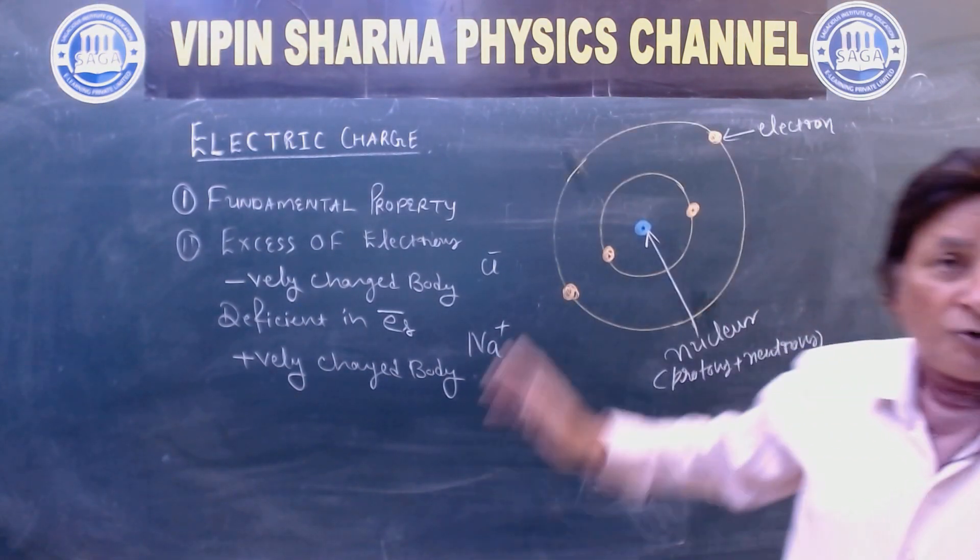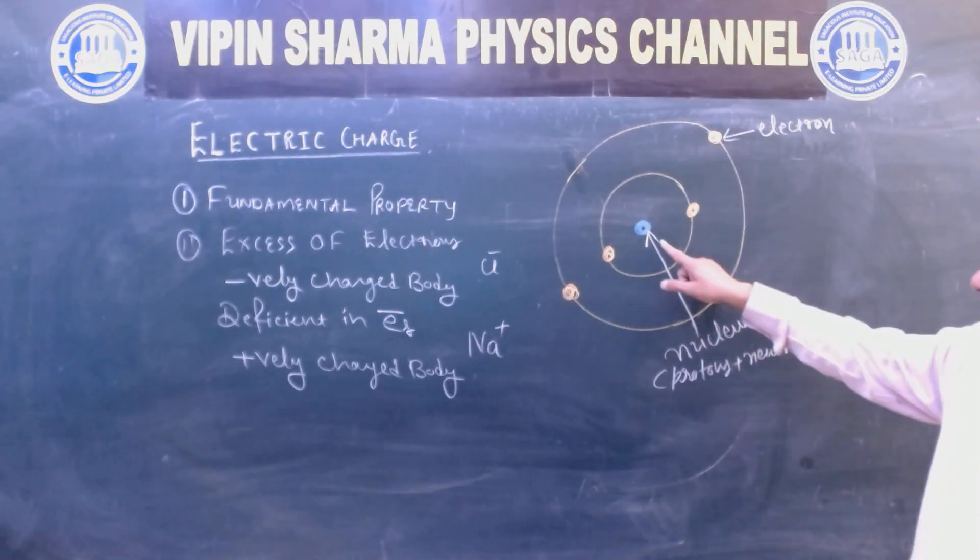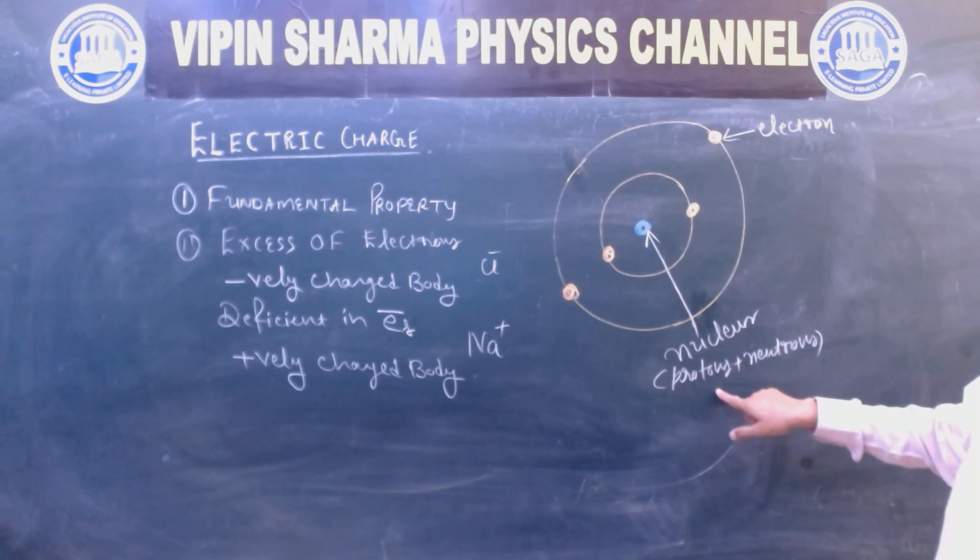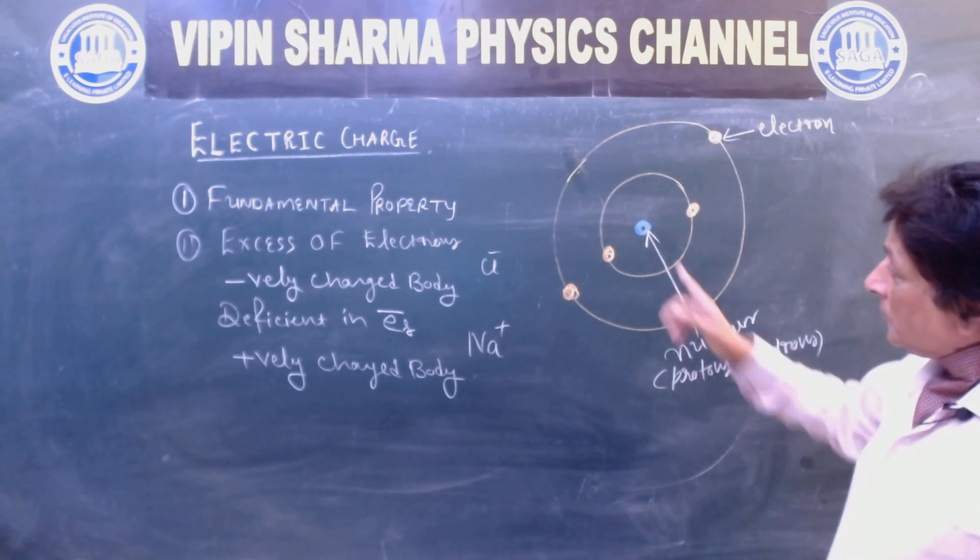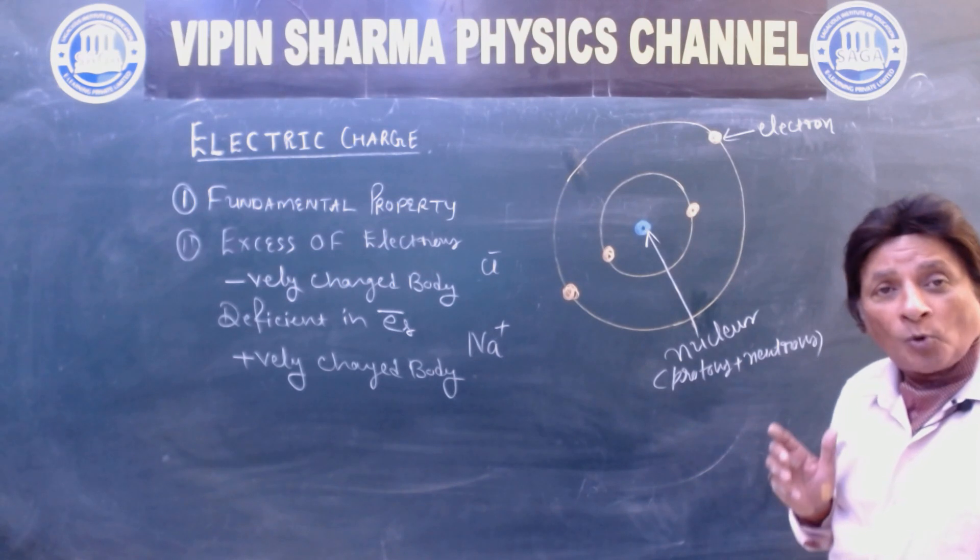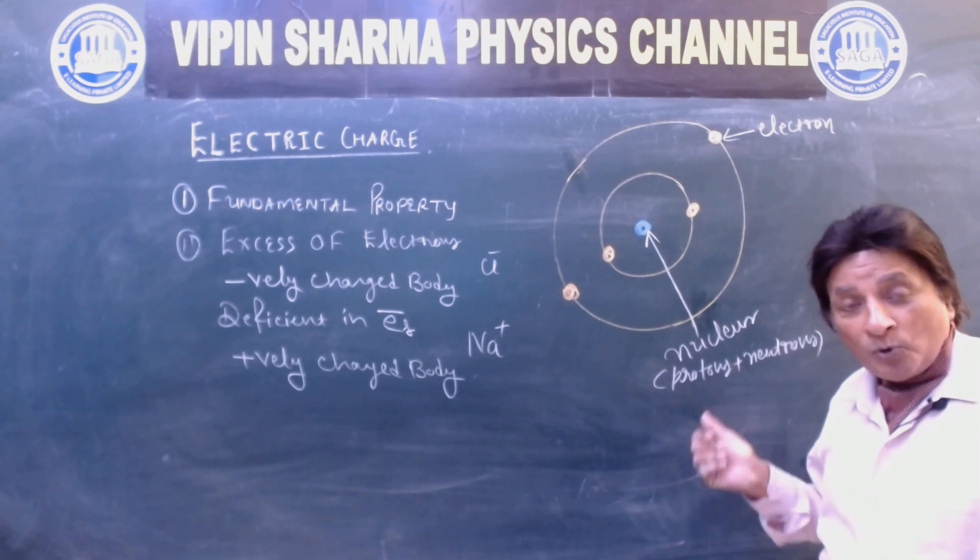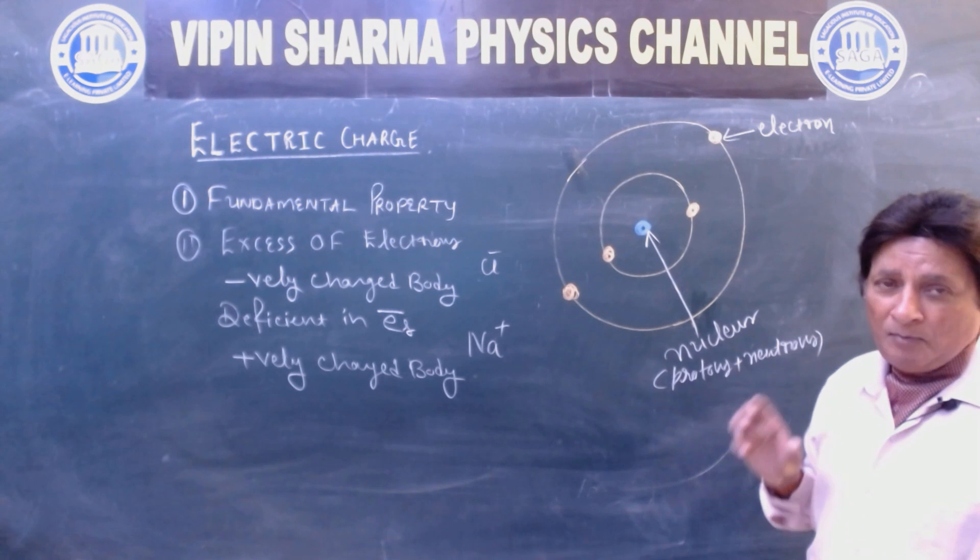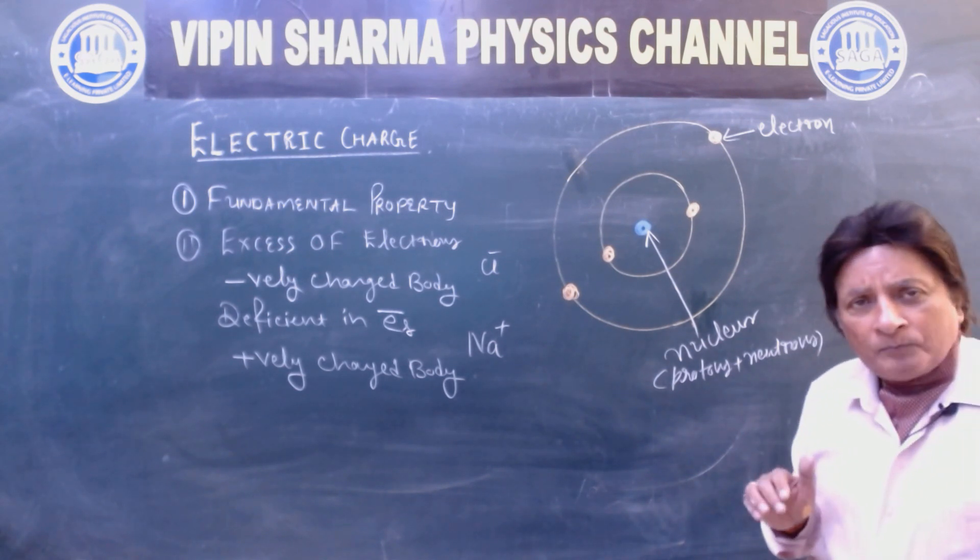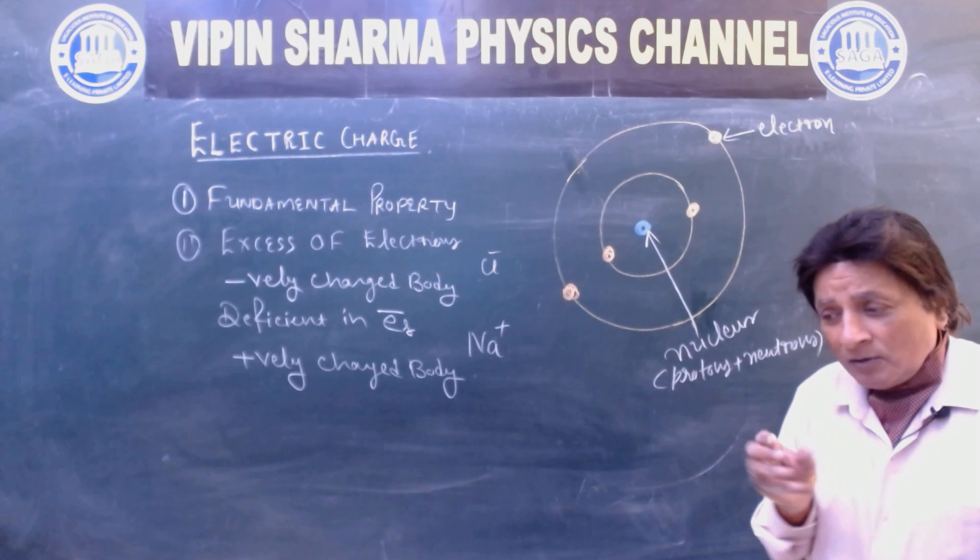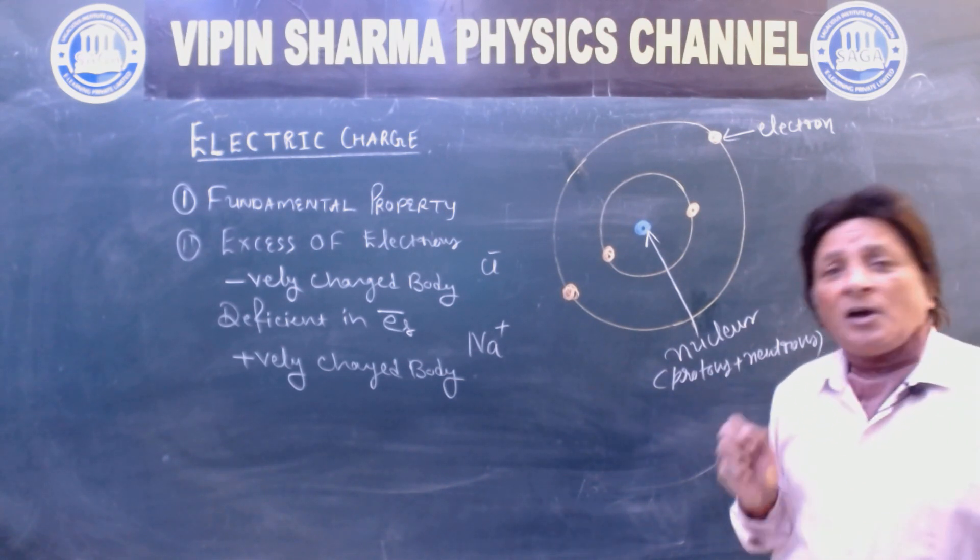I am showing you a picture. This dense central part is called nucleus. Nucleus contains protons plus neutrons. Atom's dense central part is called nucleus. It is very dense. If you see, it is like a core of fruit. It is a dense part.